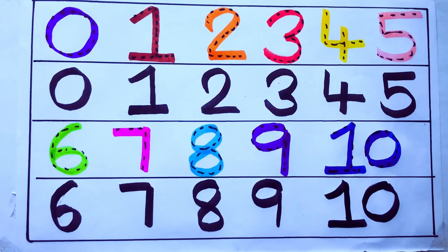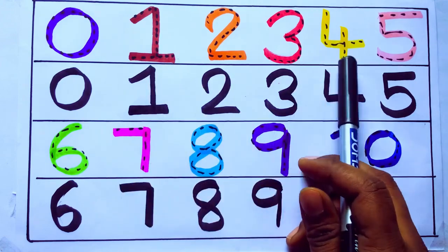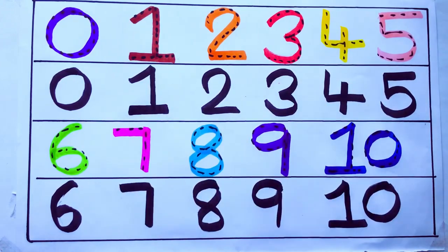One second learning numbers: 0, 1, 2, 3, 4, 5, 6, 7, 8, 9, 10. Okay.